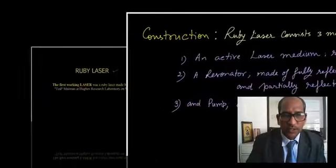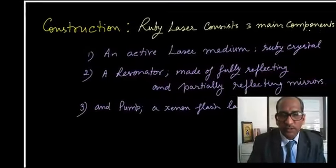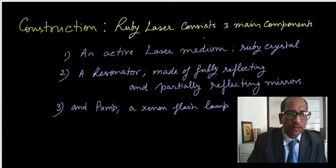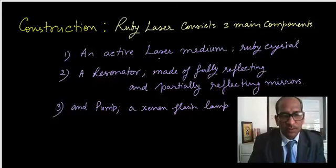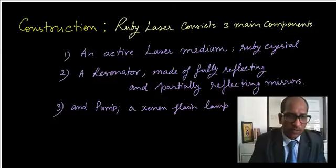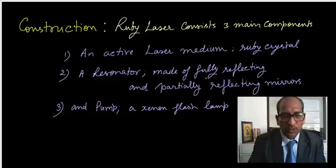Construction: Ruby laser consists of three main components. Number one, an active laser medium - ruby crystal. Number two, a resonator made of fully reflecting and partially reflecting mirrors. And third, a xenon flash lamp for the pumping process.